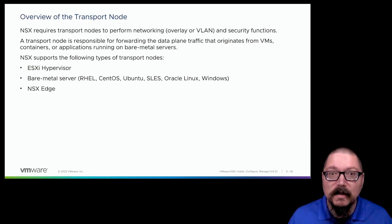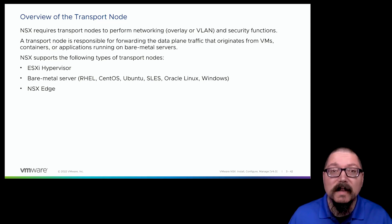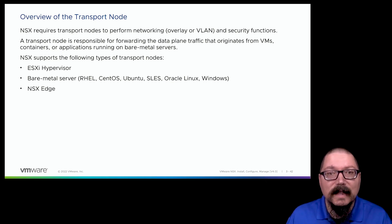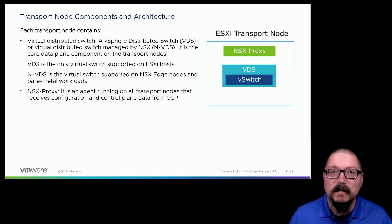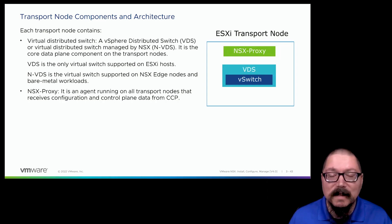A transport node could be an ESXi hypervisor. It could be a bare metal server, which encompasses quite a few different modern operating systems — Linux distributions or Windows. And the NSX edge is also a transport node, giving us a lot of flexibility. A transport node is made up of two components from an NSX perspective: one is the local control plane — the NSX proxy service that provides ingress from the central control plane to program out the data plane.